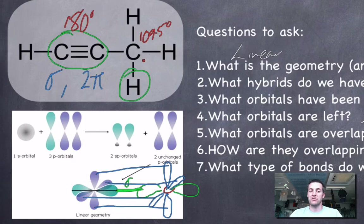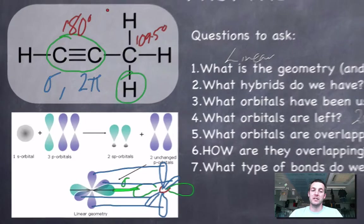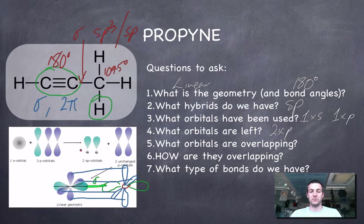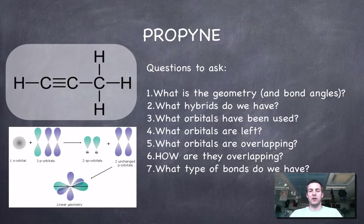The sigma bond is formed by the overlap of sp with sp, and the two pi bonds are both formed by the overlap of p orbitals with p orbitals. The other carbon in propyne is tetrahedral, with 109.5-degree bond angles, so it must be sp3 hybridized. That sp3 hybrid overlaps with the s orbital of hydrogen to form sigma bonds.